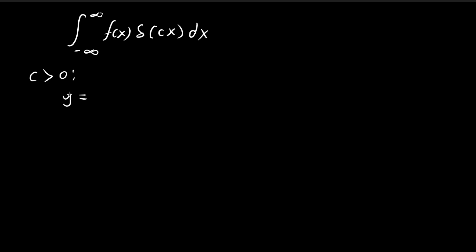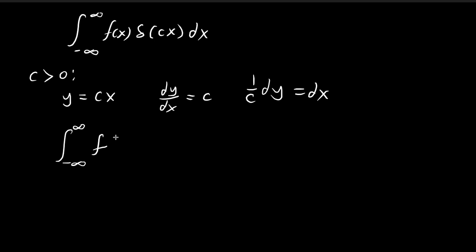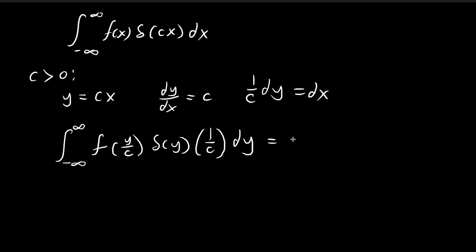For this case, I'm going to do a substitution. I'm going to let y be equal to cx. In such a case, dy/dx is equal to c, so dx equals 1/c dy. This integral will become f of y over c. The bounds still go from negative infinity to positive infinity because c is positive — substituting negative infinity for x gives negative infinity for y, and positive infinity for x gives positive infinity for y. So the bounds remain the same, the Dirac delta function becomes delta of y, and dx becomes 1/c dy.